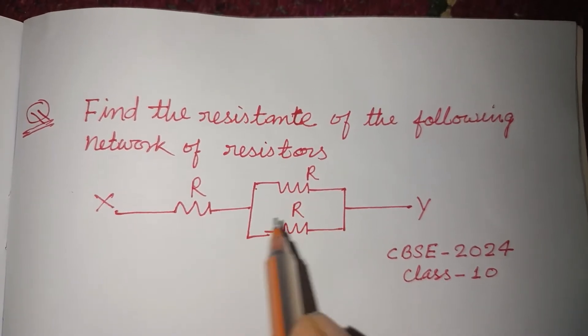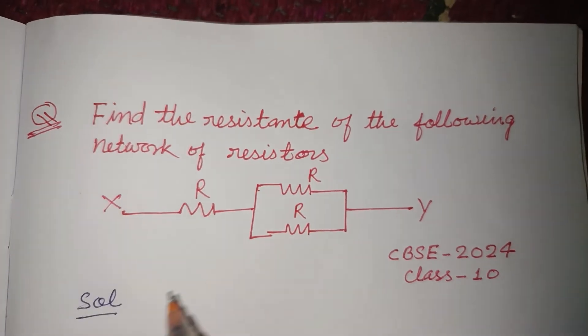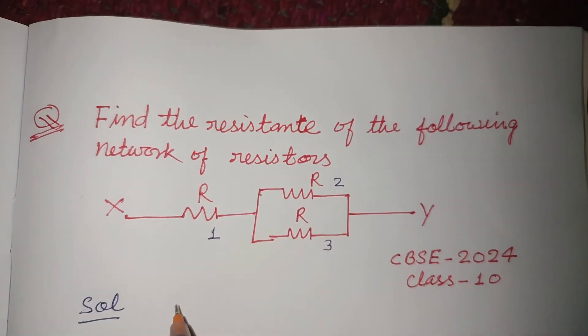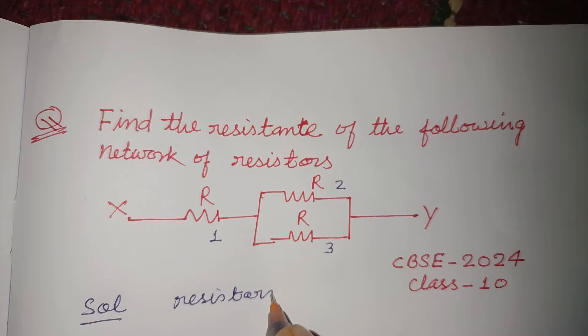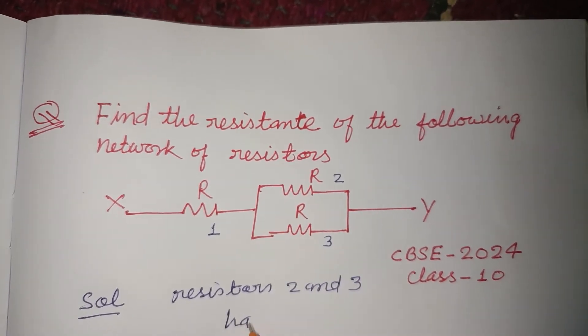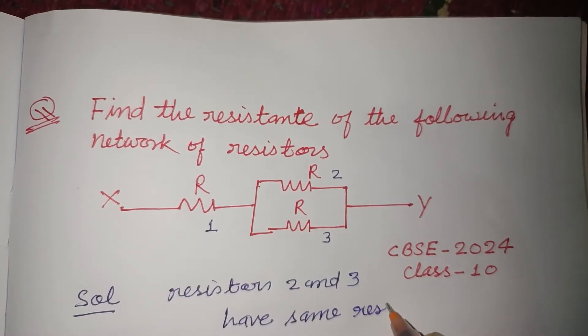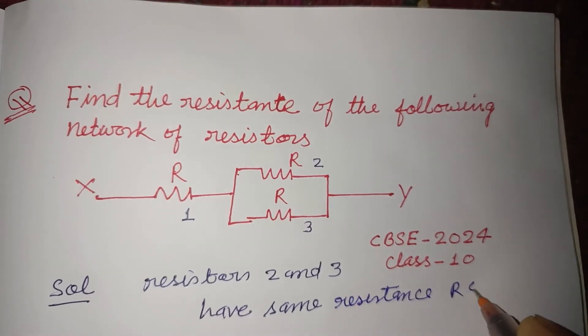same resistance R, and let this be one, two, three. So resistors two and three have same resistance R ohm.